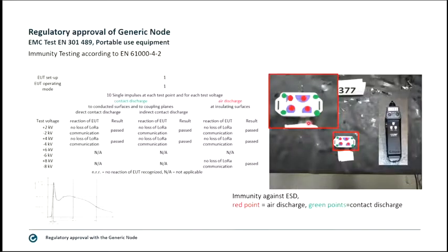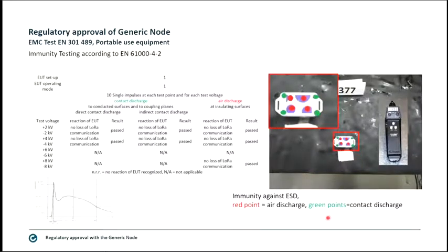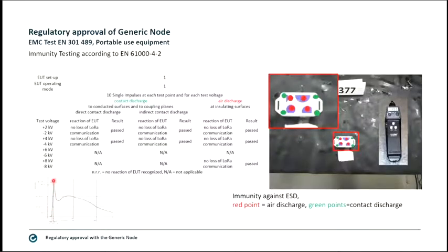This picture shows the device with added markers. The green points are contact discharge points where the ESD gun is directed and makes contact. The red points are air discharge locations where the ESD gun is held a few millimeters to a centimeter above and the impulse is triggered. The ESD impulse shown below the table has a very short rise time, reaches maximum voltage, then shows a decline — very short in total.